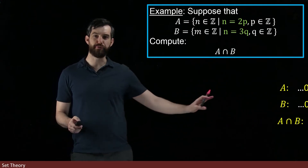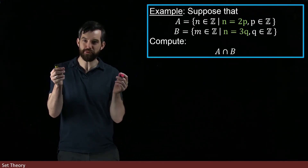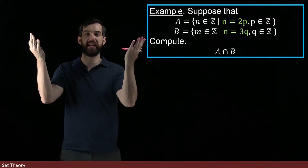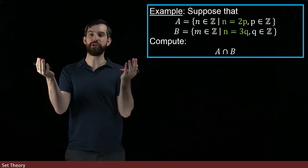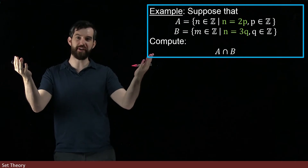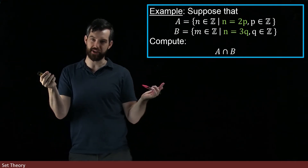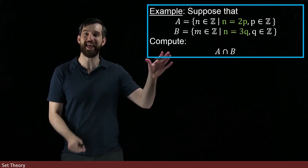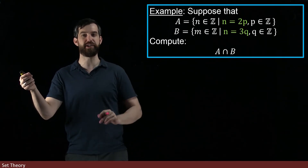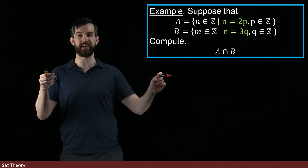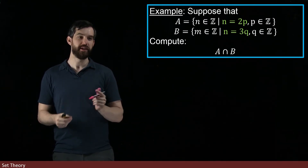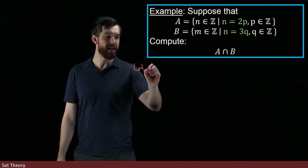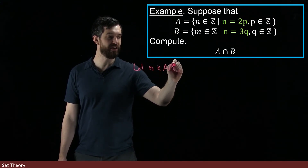Now if we're going to formally prove this, I'm going to use the same trick as before. I'm claiming that A intersect B equals all the multiples of 6. To show set equality, I need to show if something is in one set it's in the other, and vice versa — both directions. The proof is going to use biconditionals, logical implications that work both ways at every single step. Let n be an element of A intersect B — that's my starting assumption.